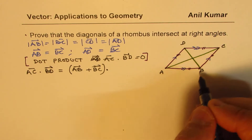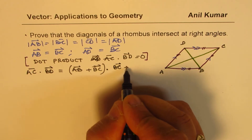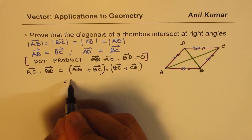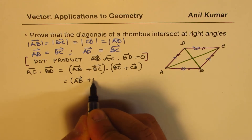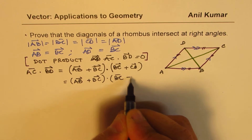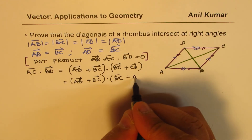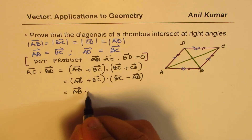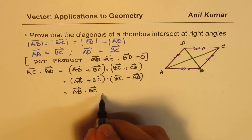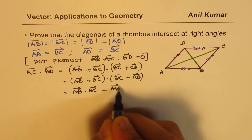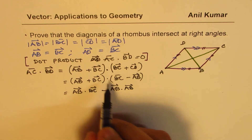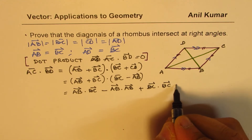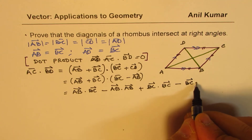... (BC − AB), since CD equals AB. Expanding, we get: AB·BC − AB·AB + BC·BC − BC·AB.